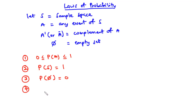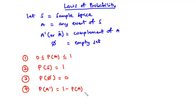For Law 4: the probability of the complement of A is equal to 1 minus the probability of event A. So P(A') = 1 − P(A). For example, if the probability of event A occurring is 0.6, then the probability that event A will not occur — the probability of the complement of A — is equal to 1 minus 0.6, which equals 0.4.